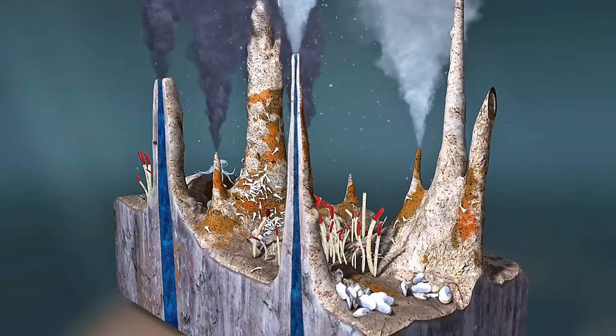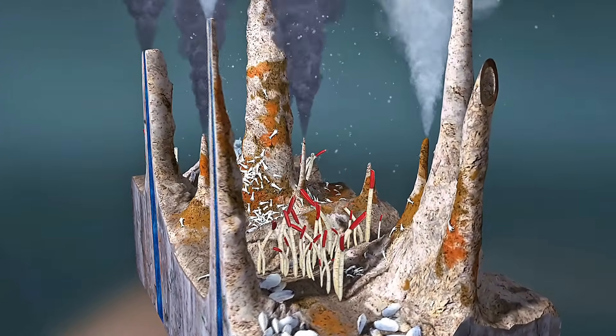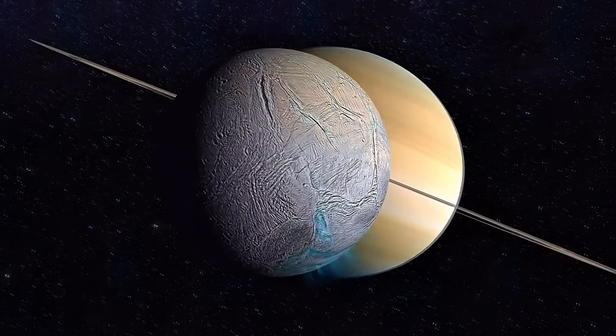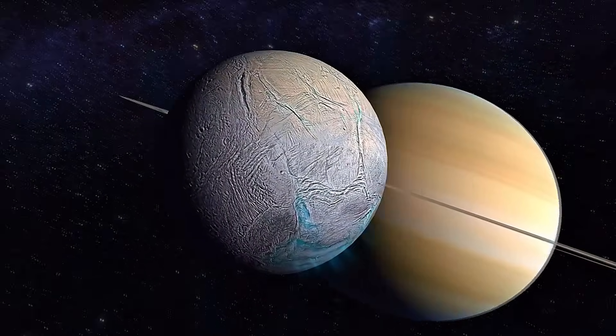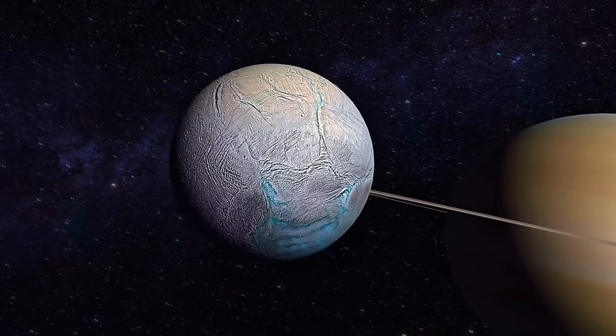On Earth, these same kinds of vents are teeming with life that thrives on chemical energy. No sunlight required. This means Enceladus isn't just a world with the potential for life. It is a confirmed, active, habitable environment. It has all three ingredients for life as we know it.